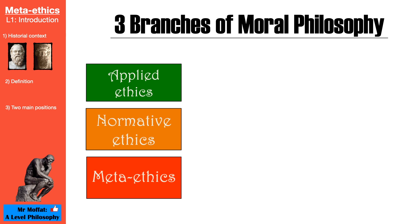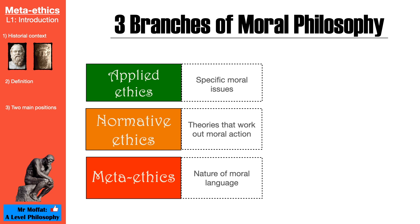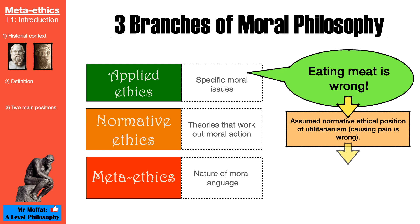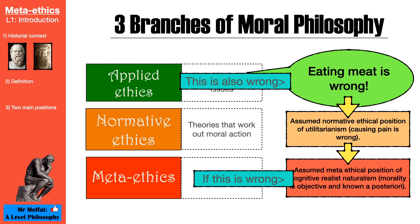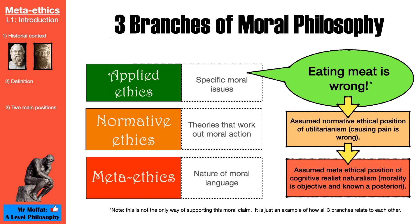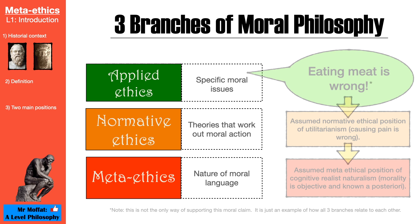These three branches layer on top of each other. In fact, whenever someone makes a moral claim about a specific issue in applied ethics, they are also taking — whether they know it or not — a position in normative and metaethics. This is what makes metaethics so interesting, as it's the deepest level. It examines the most fundamental assumptions we have about the nature of morality. Everything else is built on top of it.